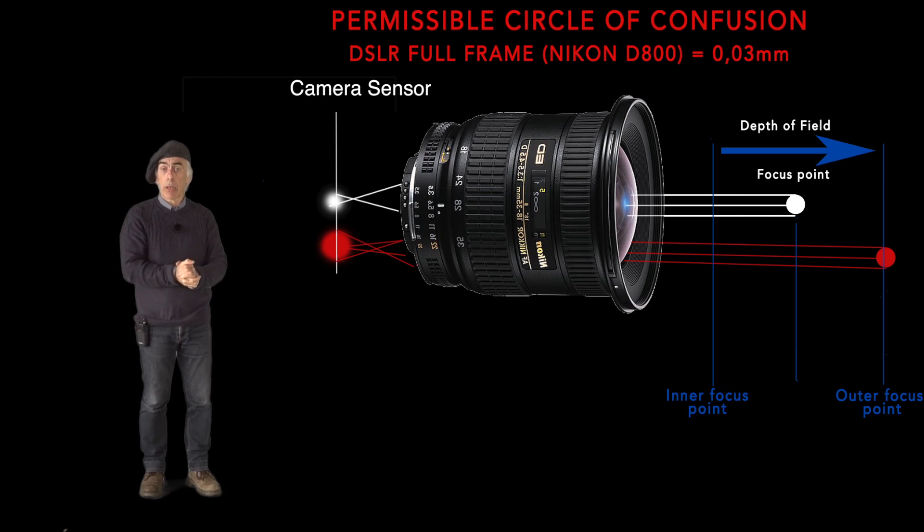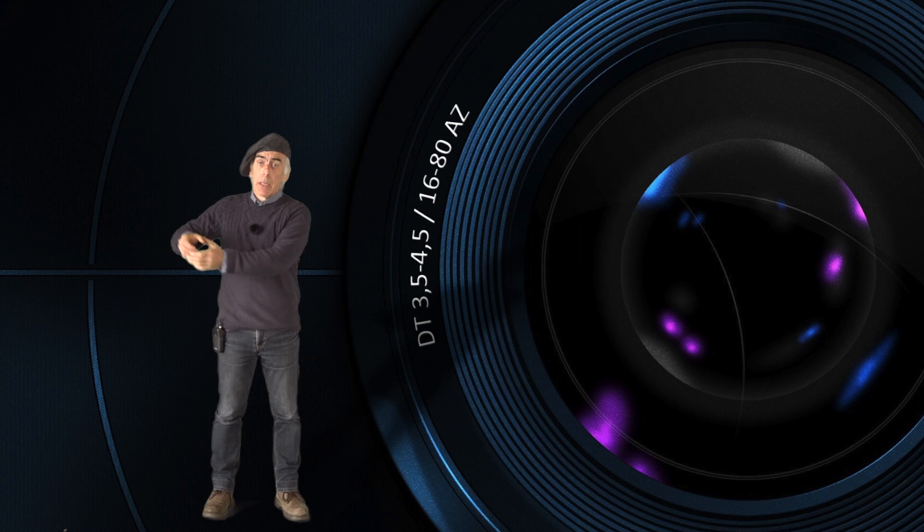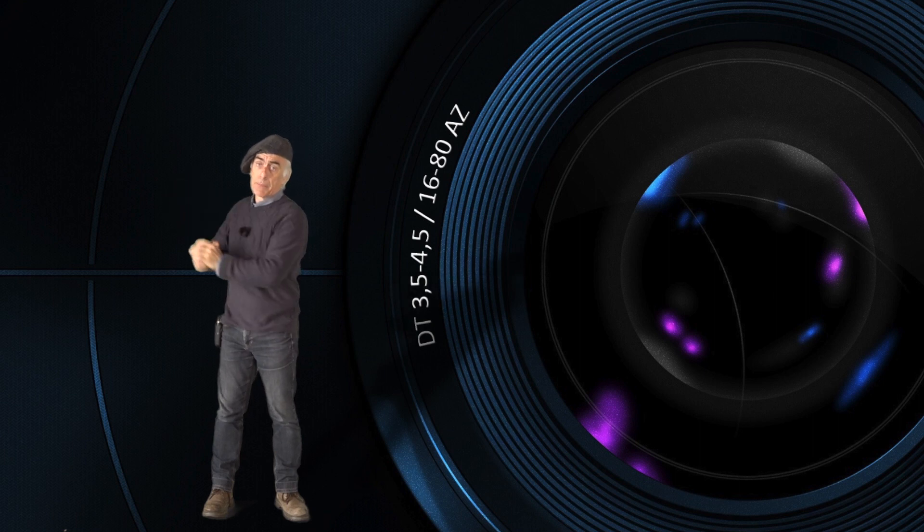All right, we just went through the circle of confusion and now we know that the circle of confusion is defined by the lens, by the imperfections, and it's the absolute minimum dish or spot that your lens can create at the focus point. That's very low, so we really don't need to worry too much about that.